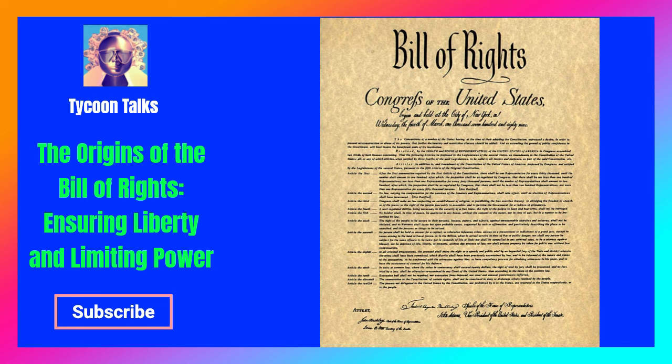The Constitutional Convention: The delegates at the Constitutional Convention, led by figures such as James Madison, Alexander Hamilton, and George Washington, crafted the U.S. Constitution. The new Constitution proposed a stronger federal government with expanded powers, including the ability to tax, regulate commerce, and maintain a standing army. While the Constitution aimed to create a more effective and unified government, it did not initially include explicit protections for individual liberties.